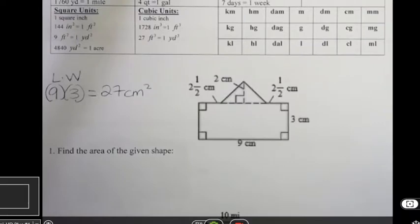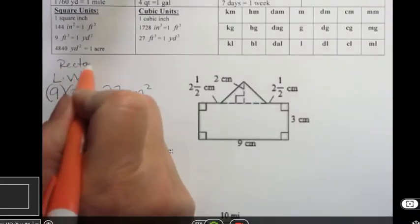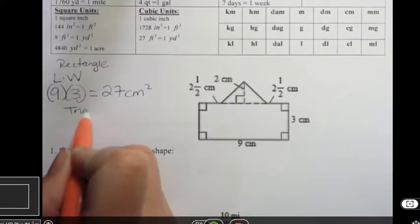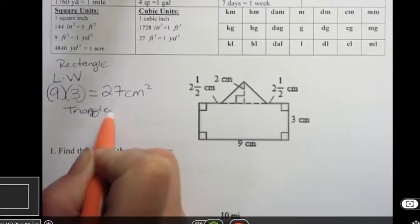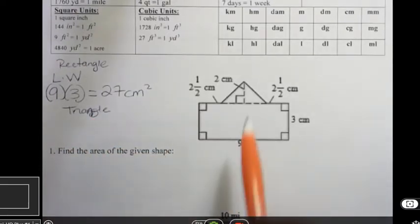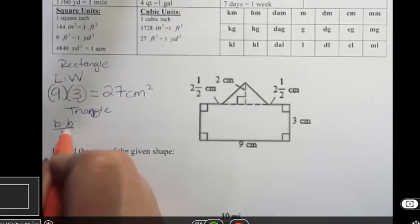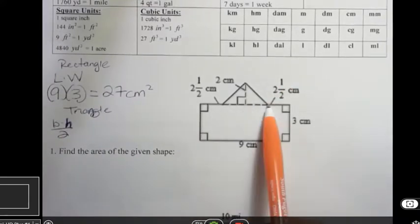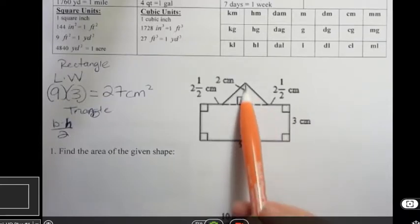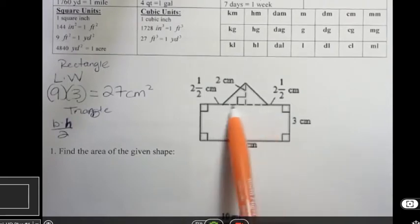All right, and then I want to do the triangle part. So this is the rectangle, this is the triangle. The problem with that is that the triangle formula is base times height divided by 2, or one-half base times height. Well, I don't know the base because it didn't tell me that. It does tell me the height is 2, but what is this part?